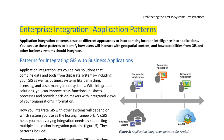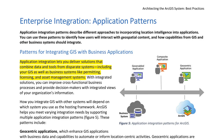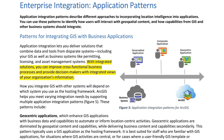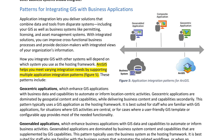Enterprise Integration — Application Patterns. Application integration patterns describe different approaches to incorporating location intelligence into applications. You can use these patterns to identify how users will interact with geospatial content, and how capabilities from GIS and other business systems should integrate. Application integration lets you deliver solutions that combine data and tools from disparate systems — including your GIS as well as business systems like permitting, licensing, and asset management systems. ArcGIS helps you meet varying integration needs by supporting multiple application integration patterns (Figure 5).